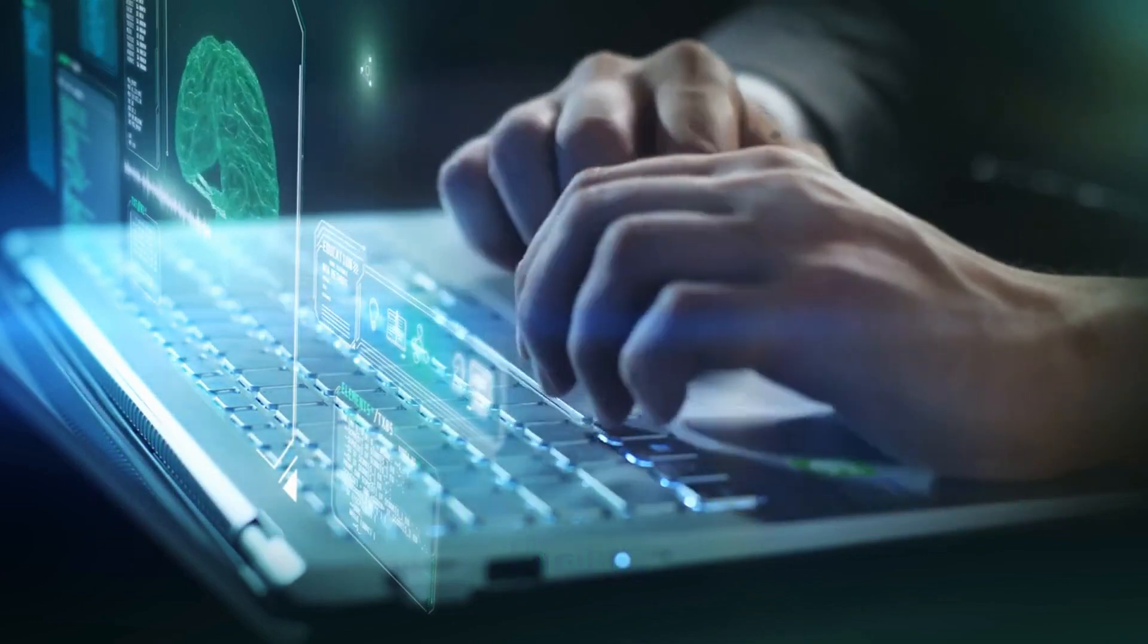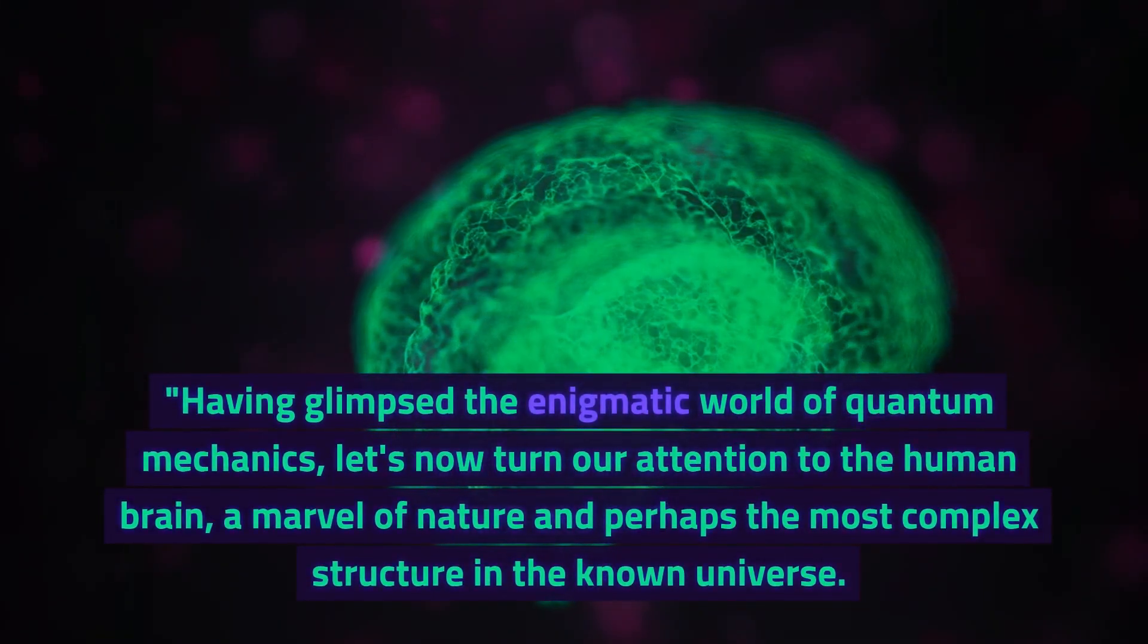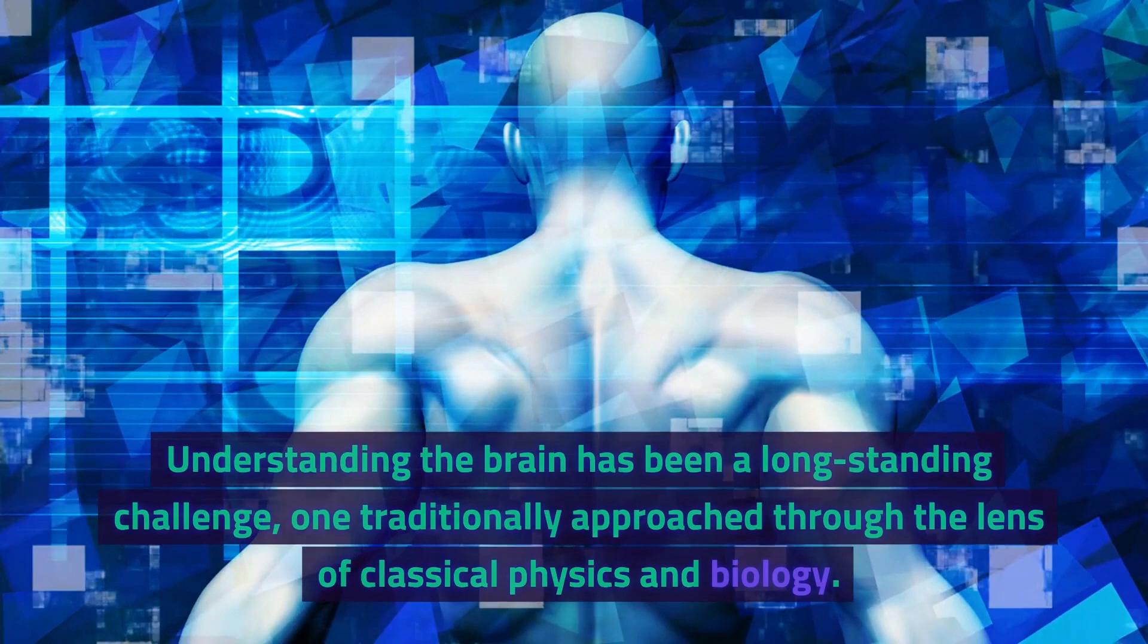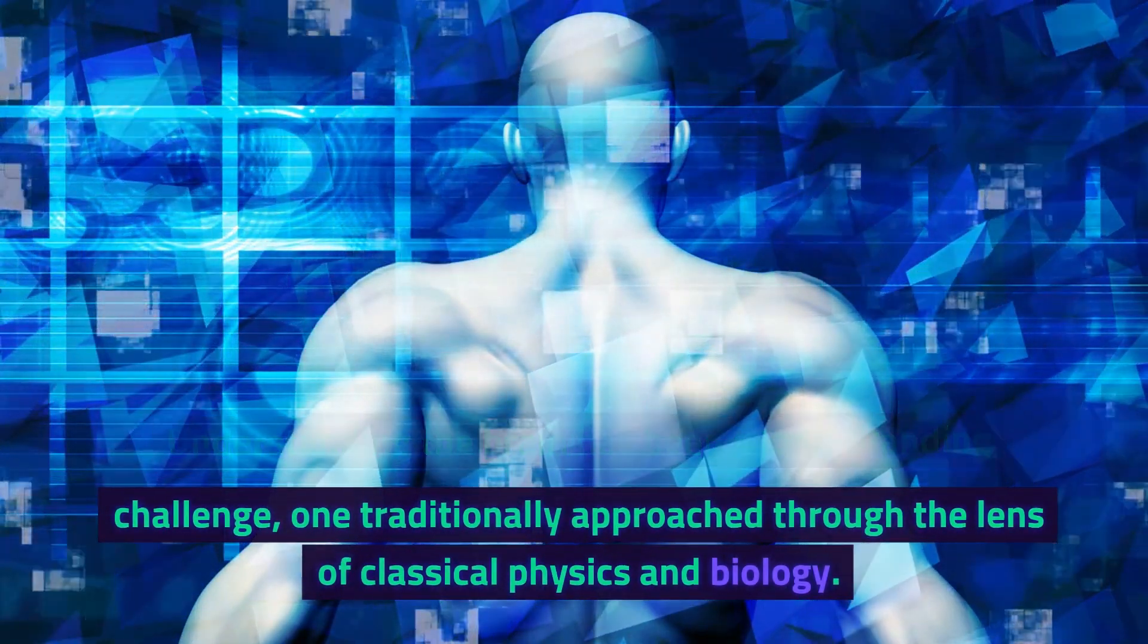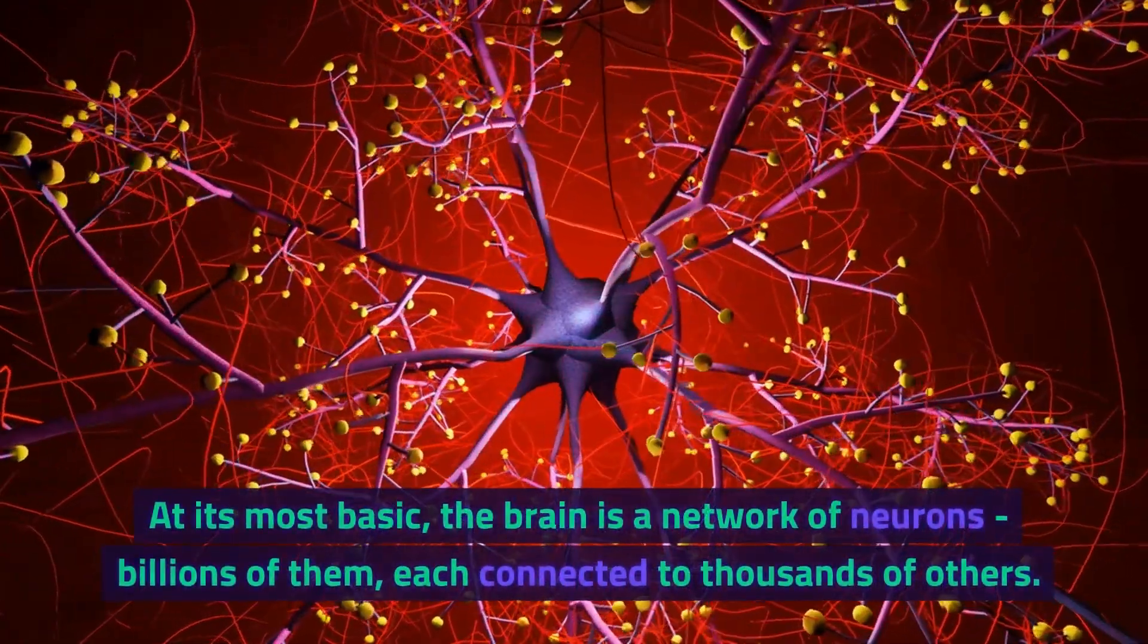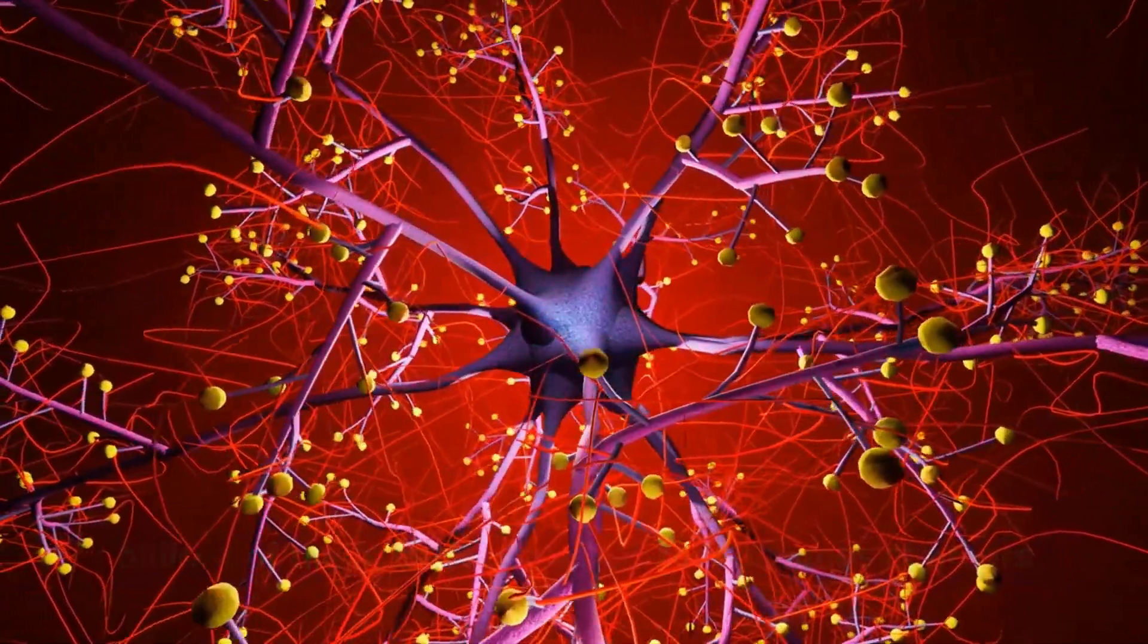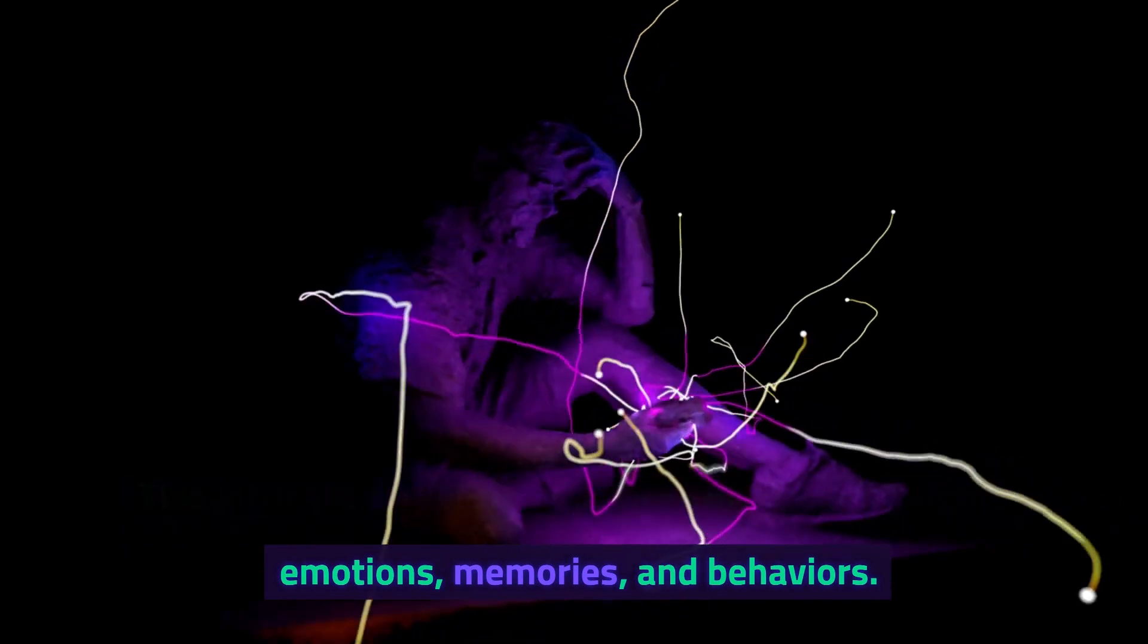Having glimpsed the enigmatic world of quantum mechanics, let's now turn our attention to the human brain, a marvel of nature and perhaps the most complex structure in the known universe. Understanding the brain has been a long-standing challenge, one traditionally approached through the lens of classical physics and biology. At its most basic, the brain is a network of neurons, billions of them, each connected to thousands of others. This intricate web forms the basis of all our thoughts, emotions, memories, and behaviors.